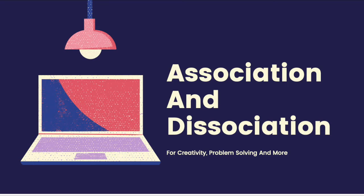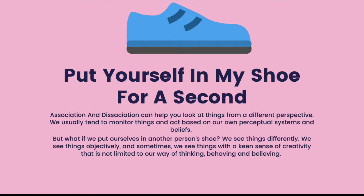When you think about it, you realize: that's right, this is how it happens, I can do that, I can be that. So let's get to it. Do you remember the last time somebody said to you, 'Put yourself in my shoes for a second. Look at things from my perspective.' If you did, you probably noticed that your judgment might change. Association and dissociation can help you look at things from a different perspective.